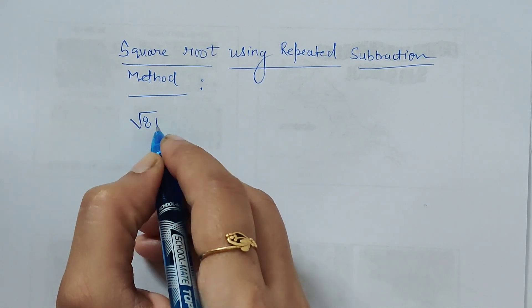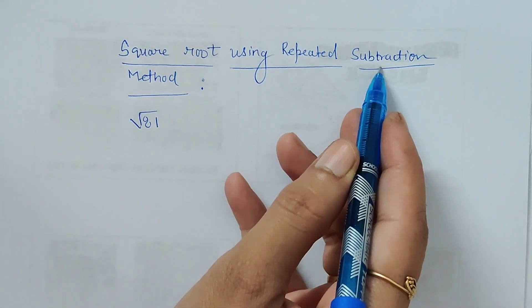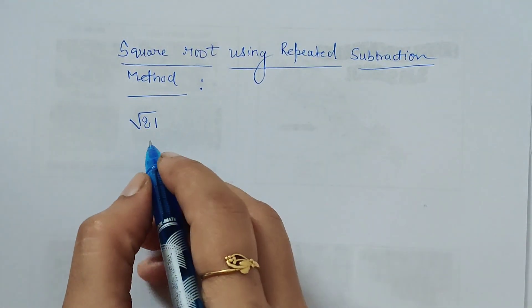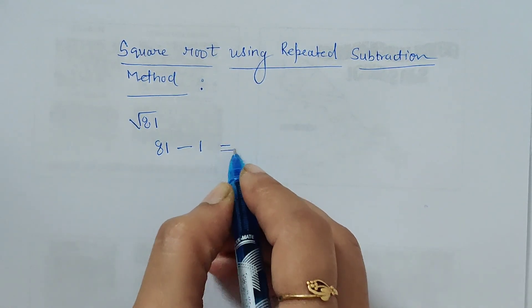If we are asked to find square root of 81, we all know it is 9, right? But using repeated subtraction method, how can we solve? We just have to keep subtracting successive odd numbers. So 81 minus 1 is 80.